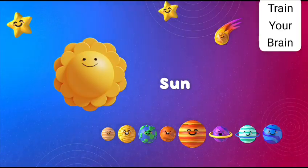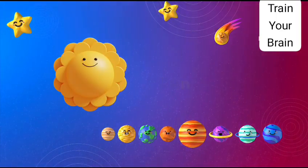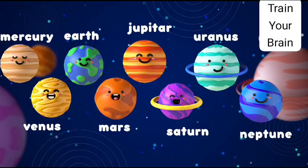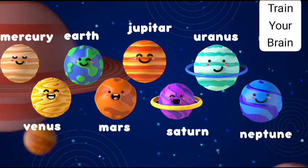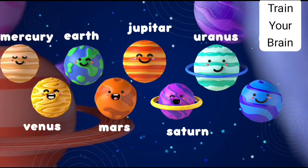Let's repeat with me. There are eight planets which orbit around the sun: Mercury, Venus, Earth, Mars, Jupiter, Saturn, Uranus, and Neptune.